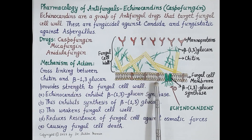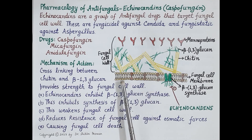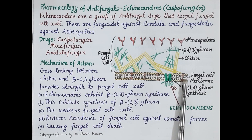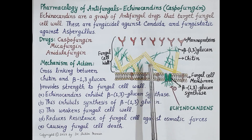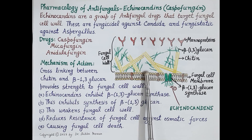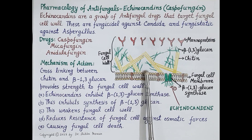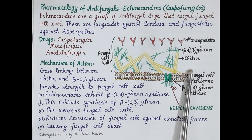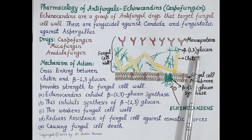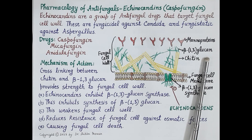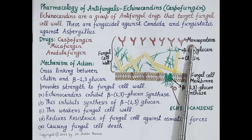Now look at this figure. Every fungal cell is surrounded by a cell membrane, which is in turn covered by a cell wall. The fungal cell wall is composed of three main components: chitin, beta-1,3 glucan, and glycoproteins — also known as mannoproteins.